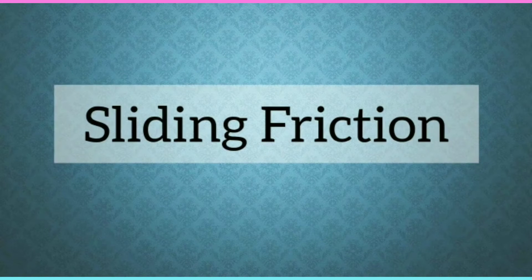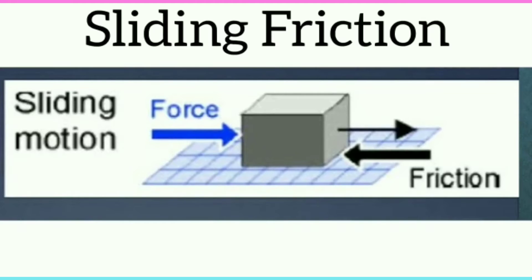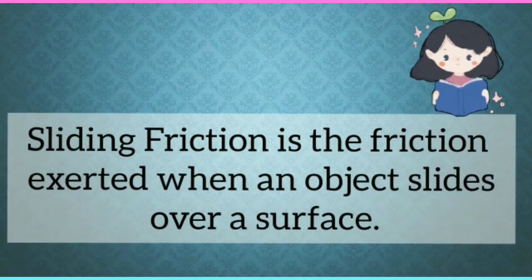Sliding friction is the force that opposes the motion between two contact surfaces that slide against each other. It means sliding friction is the friction exerted when an object slides over a surface. Students, see here.